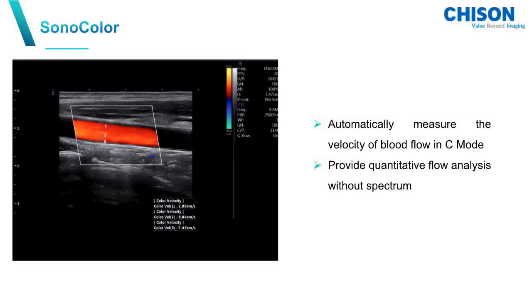SonoColor can automatically measure the velocity of blood flow in C mode, and it can provide quantitative flow analysis without a spectrum.